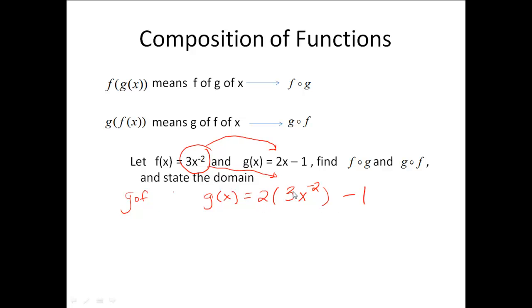Now, for this one, I can simplify that out. 2 times 3 gives me 6. So I'm going to have 6x to the negative 2 minus 1. Well, as I look at that, it doesn't appear that there's any division in it. But you have to remember these negative exponents is really 6 divided by x squared minus 1. So there is division.